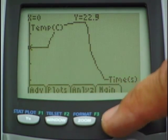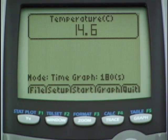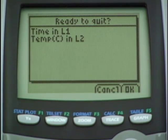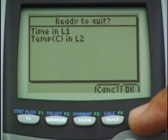Choose main again and if we're done with the experiment let's choose quit. When you choose quit it tells us where the data is stored on the calculator. That's an important screen. Then I choose okay and I'm done.